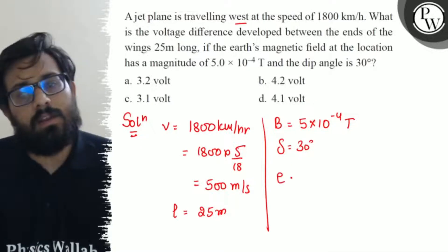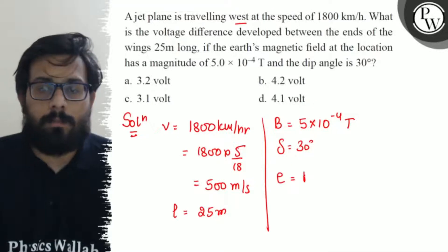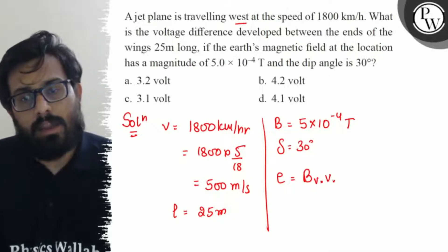So in that case it will cut the vertical component of the earth's magnetic field. So BV into B into L.